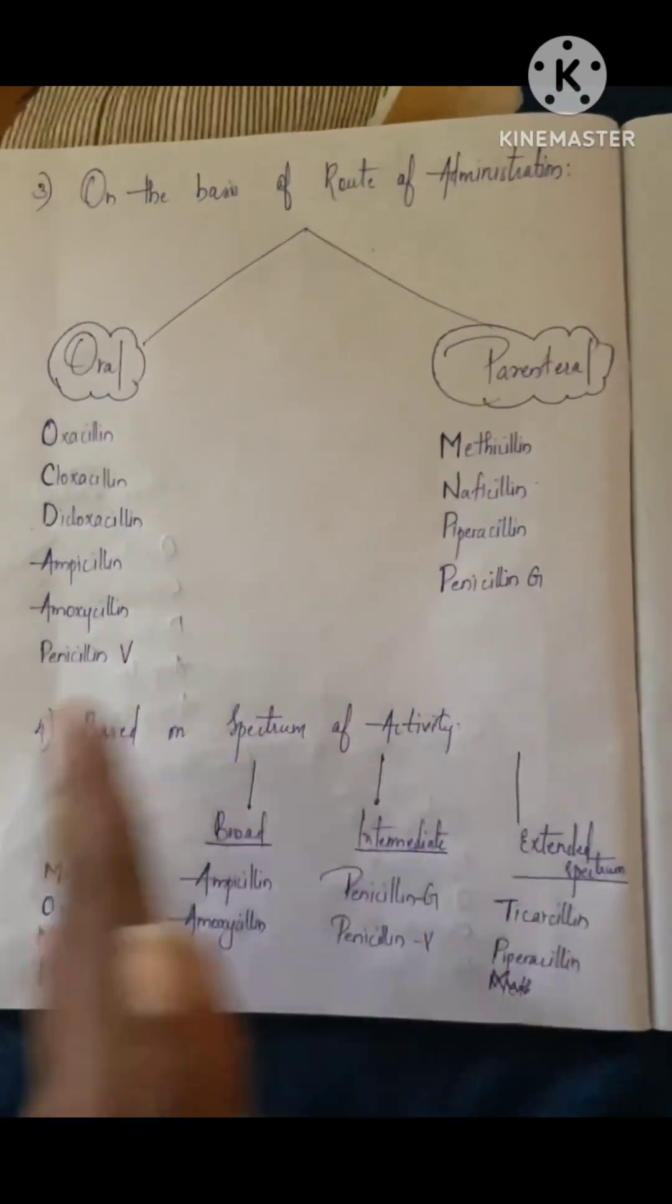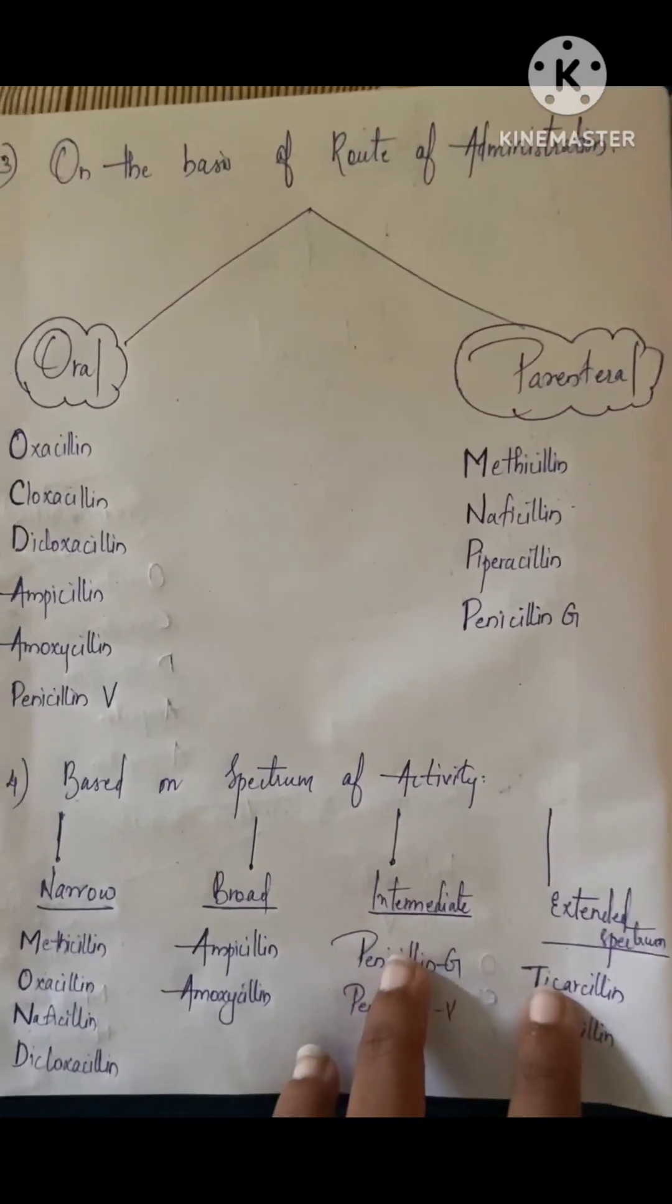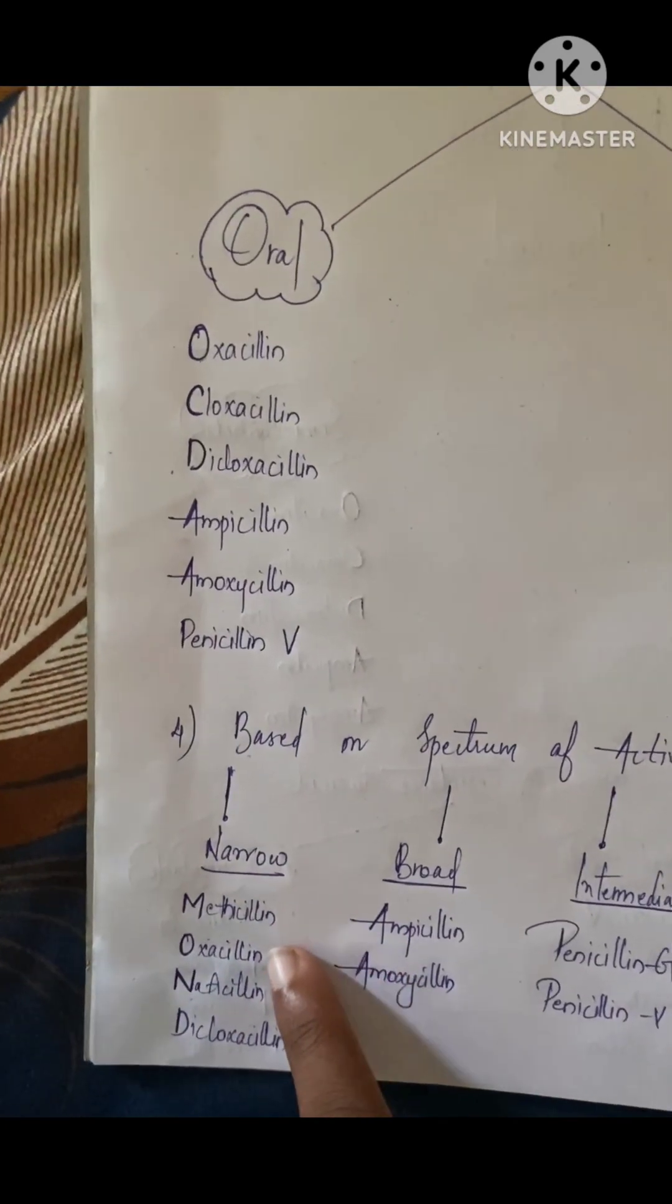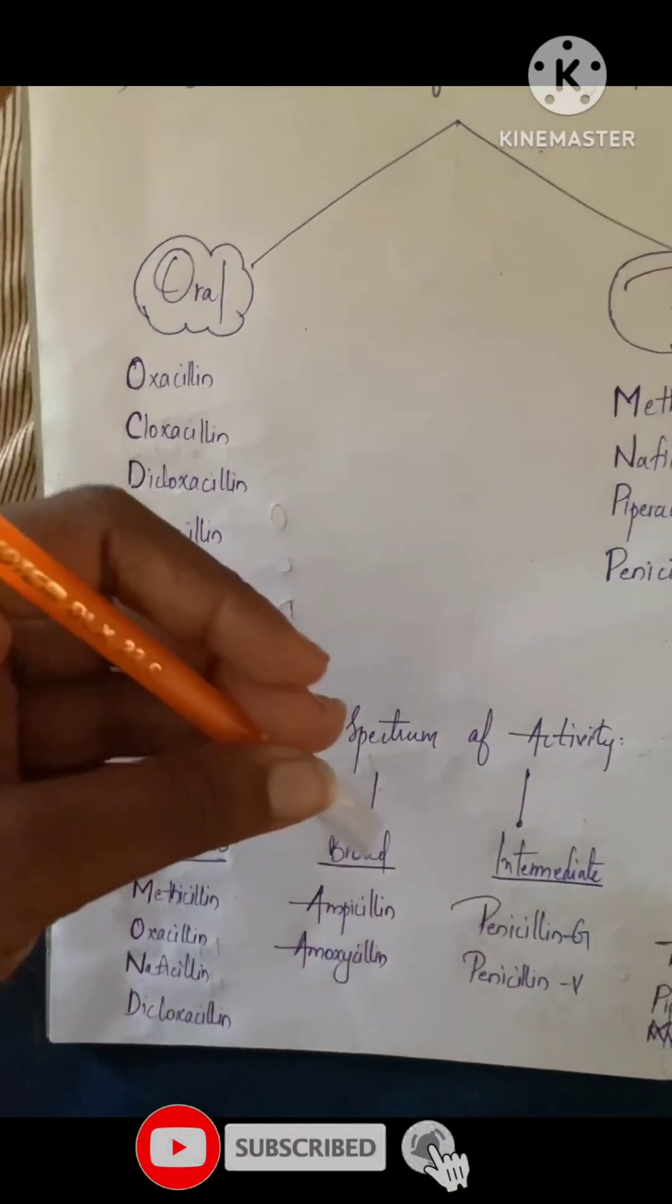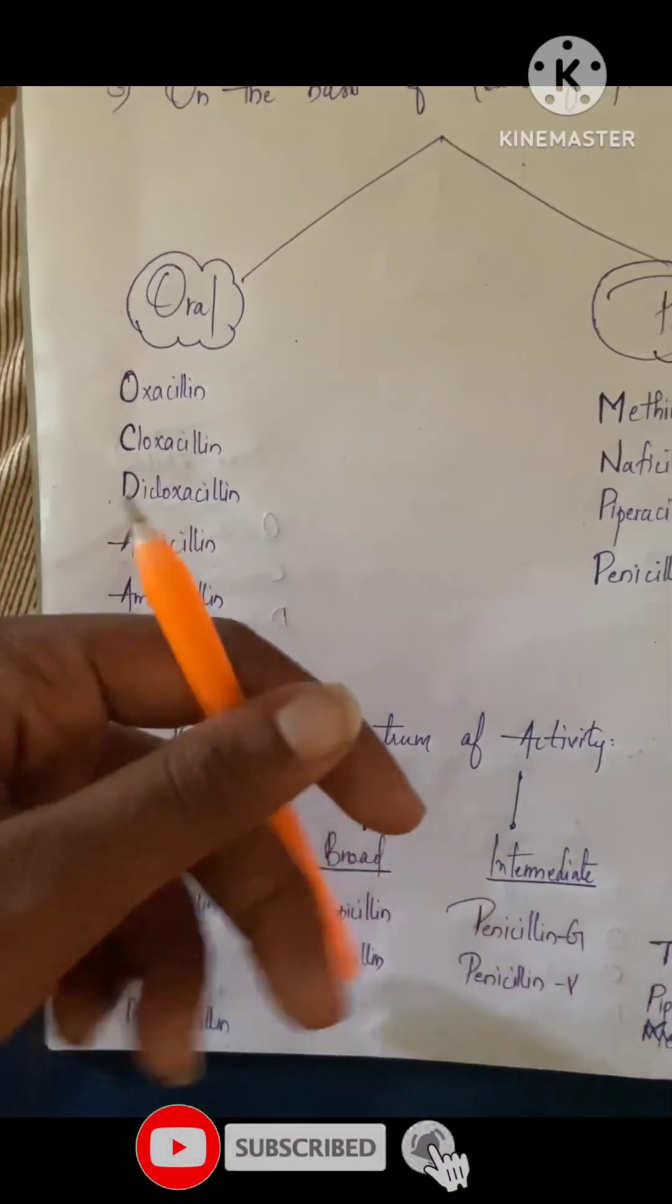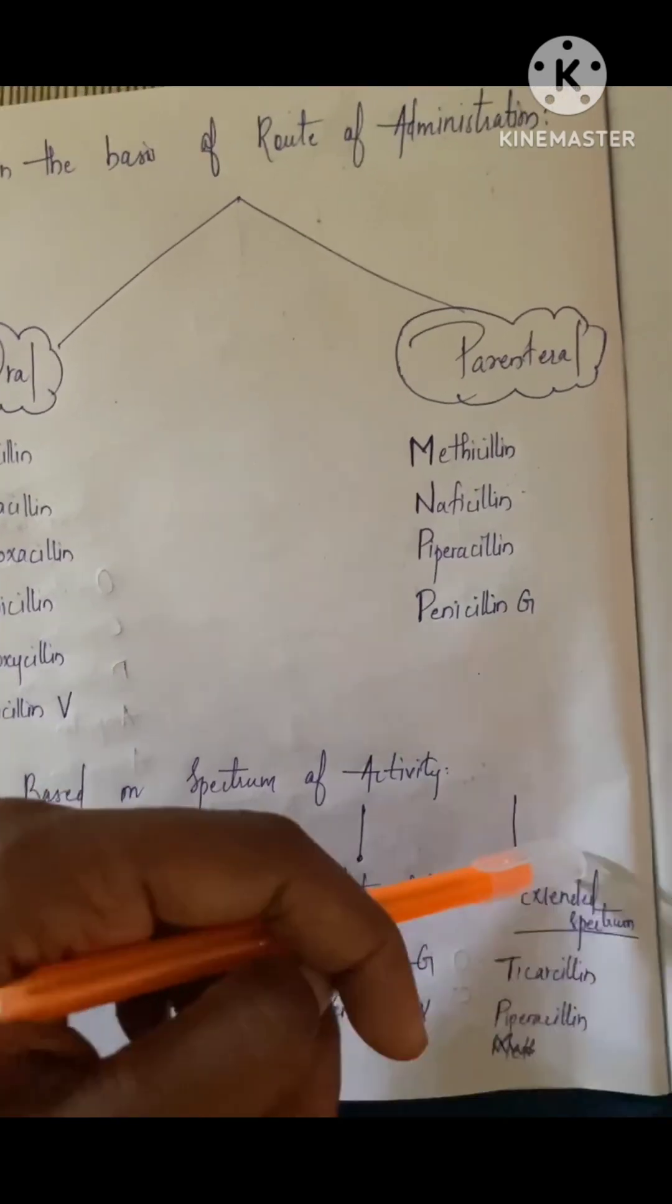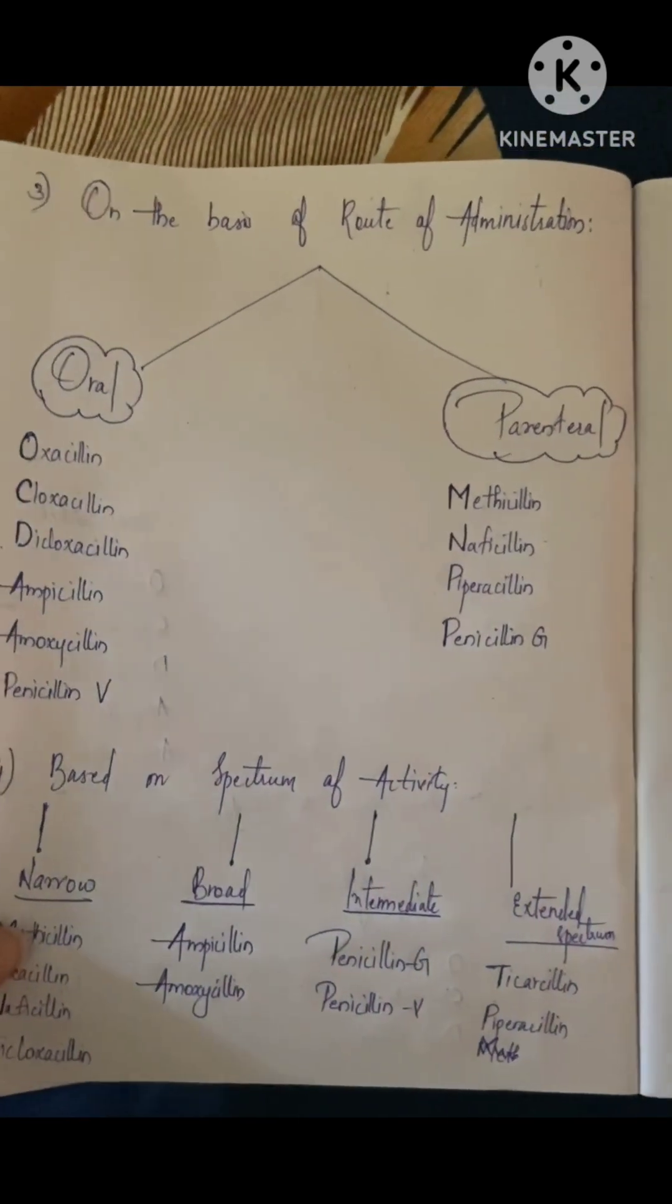Next is on the basis of spectrum of activity: narrow, broad, intermediate, and extended spectrum. Narrow spectrum includes methicillin, oxacillin, nafcillin, and dicloxacillin. Broad spectrum includes ampicillin and amoxicillin. Intermediate includes penicillin G and penicillin V. Extended spectrum includes ticarcillin and piperacillin.